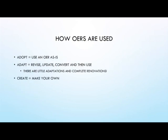When we use open educational resources in the context of formal higher education, there are three ways we can use them. One is adopt. Adopting means taking the OER and using it as is, just like you would a textbook. Two is adapt. Adapting means taking the OER and making changes to update it, translate it or convert its format, and customize it for your learners and your learning objectives.